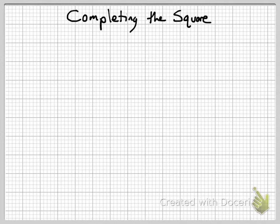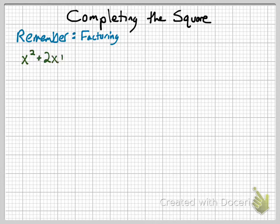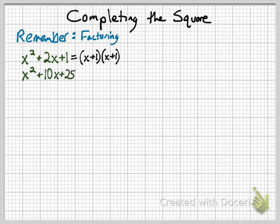So let's get started. I just want to remind you that when we're factoring, if we have something like this, that is going to be x plus 1 times x plus 1, also known as x plus 1 squared. All of these are perfect square trinomials because they're the same binomial times itself.